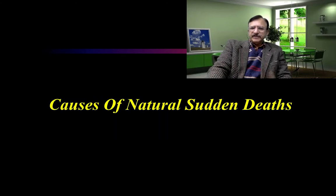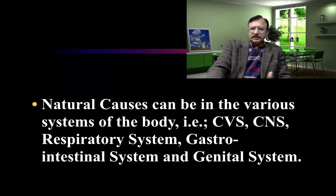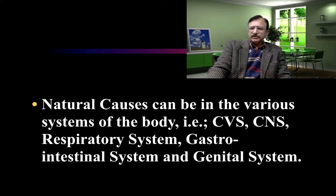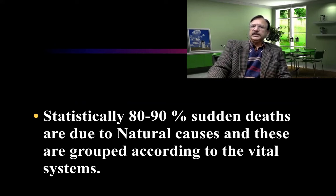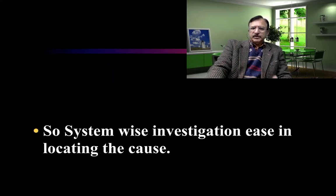The natural causes of sudden death can involve various systems of the body suffering from disease, like the cardiovascular system, central nervous system, respiratory system, gastrointestinal, and genital system. Statistically, 80 to 90 percent of sudden deaths are usually because of natural diseases, and these are grouped according to the vital systems of the body. System-wise investigation is carried out in locating the cause of death in cases of sudden deaths.